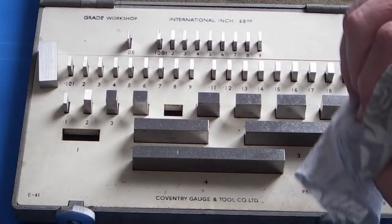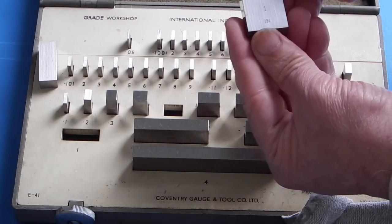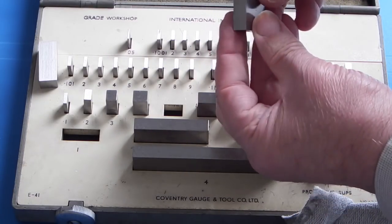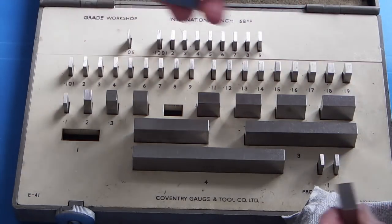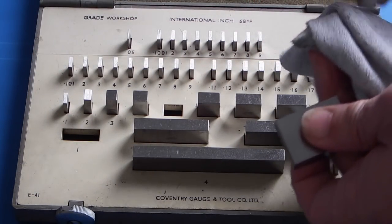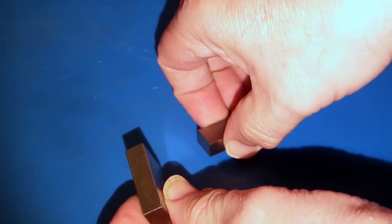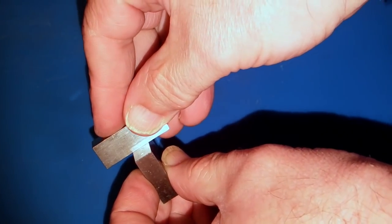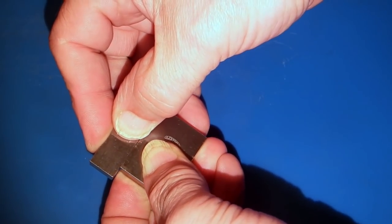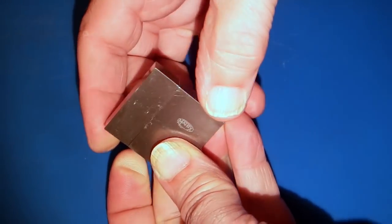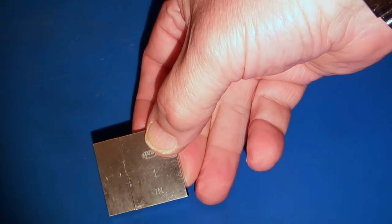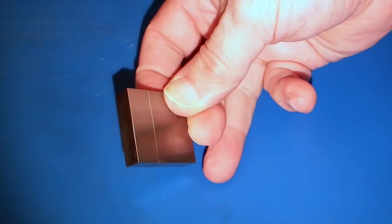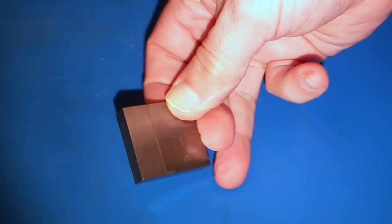If you look at a slip gauge or gauge block, it has on it a size. These are the faces that you use. You must clean the faces before you ring them together. The way you ring them together is put them 90 degrees, turn them together, move them in line, and that should hold. That will stay on there showing that it's been ringed correctly.